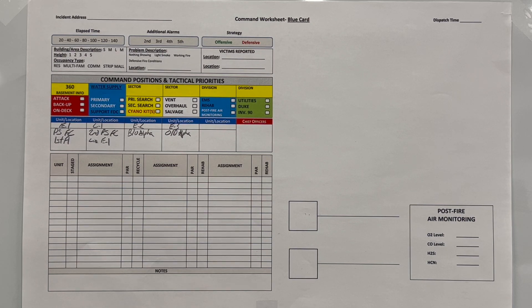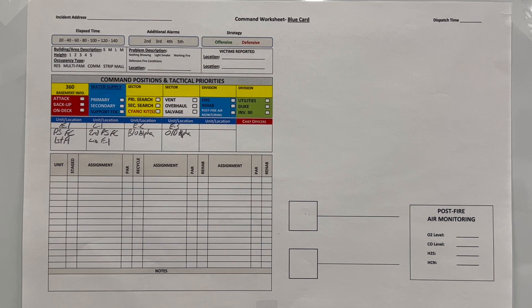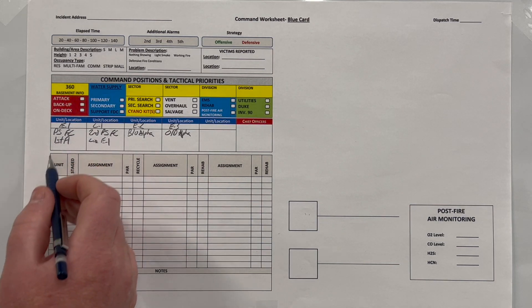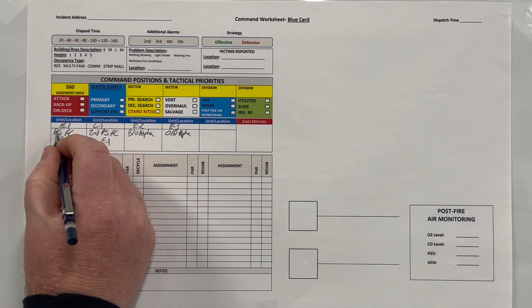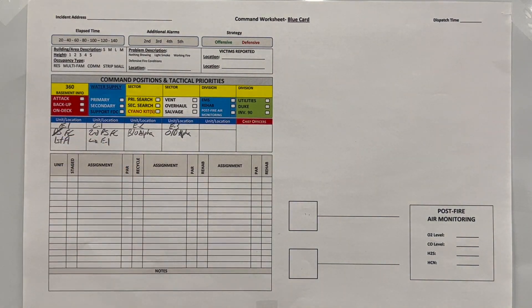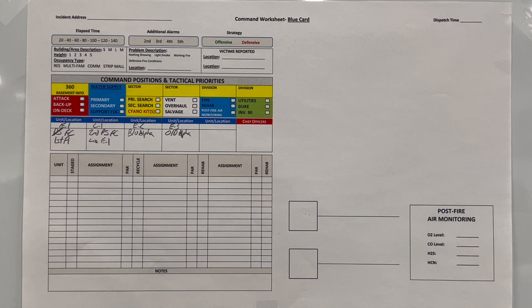Engine 1 gives me a CAN report, and that CAN report drives my incident action plan and what I'm going to do with the other companies responding. I'll document objectives and benchmarks as they're completed. If Engine 1 has completed a primary search, I draw a line through that on my sheet — that's what it looks like for me, marking off what those assignments were.